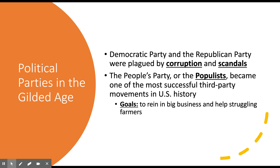It's not surprising that during this era of ineffective government, one of the most successful third-party movements in US history emerged — the People's Party, or the Populists. They reached national prominence in the 1890s, running on a platform aimed at reining in big business and helping struggling farmers. We're going to look at the different platforms of the Republicans, Democrats, and Populists, and what they stood for and who their supporters were.